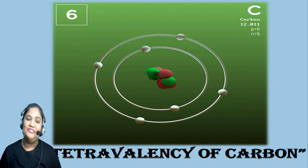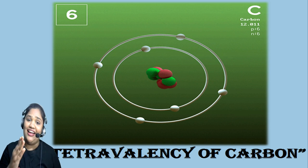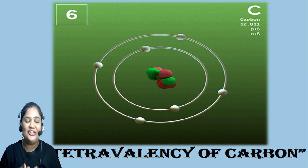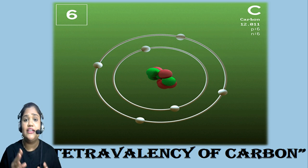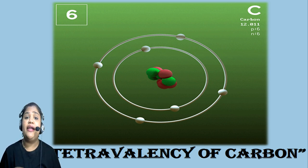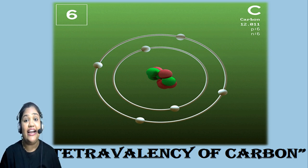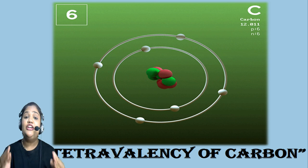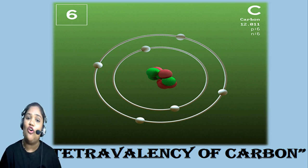Hello students, welcome back to our YouTube channel Empower Education. I am your chemistry teacher and guide Tejashni. Do you know that carbon is the fourth most abundant element in nature? Due to its unique properties, it can form many compounds in nature. Yes, that is tetravalency and catenation property. In today's video session, we are going to discuss about tetravalency of carbon.